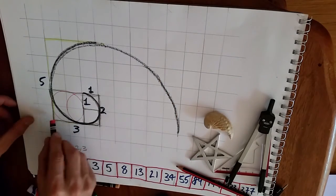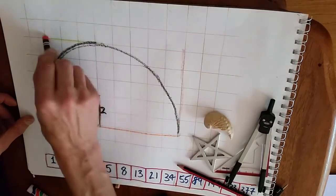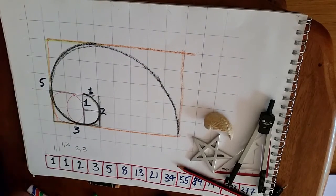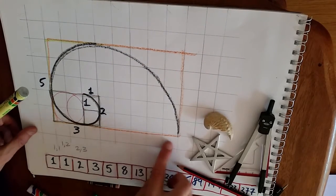You have a rectangle that is five by one, two, three, four, five, six, seven, eight.